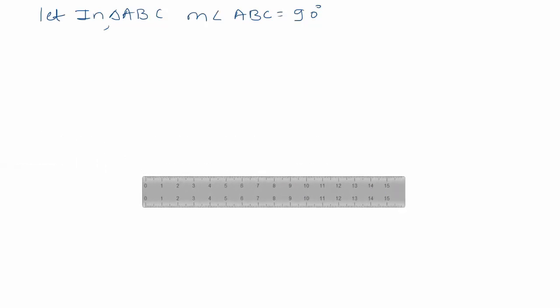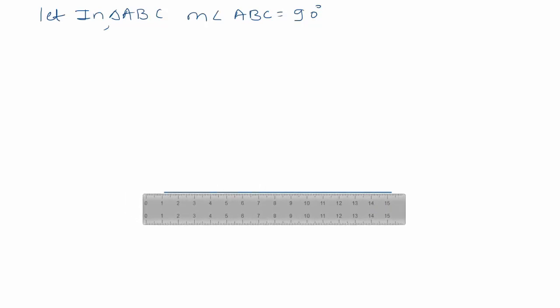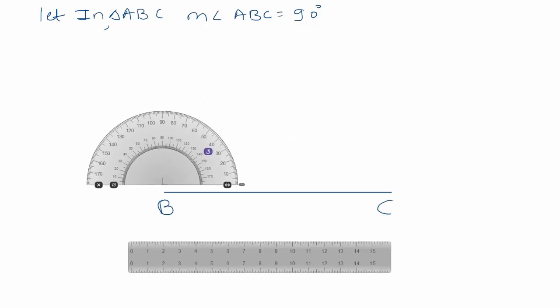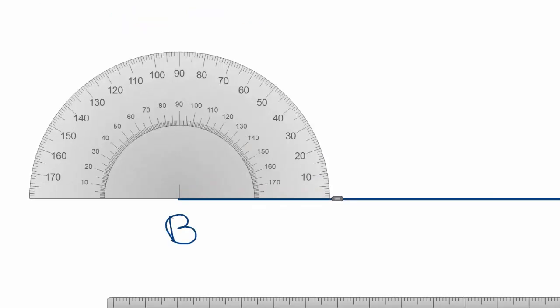Let triangle ABC, measure of angle ABC is equal to 90. Triangle ABC. Let triangle ABC, measure of angle ABC is 90 degree. This triangle ABC is a right-angle triangle. What should we draw? At the point of B, we have to draw an angle 90 degree.